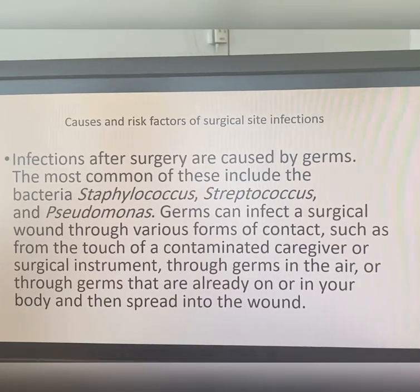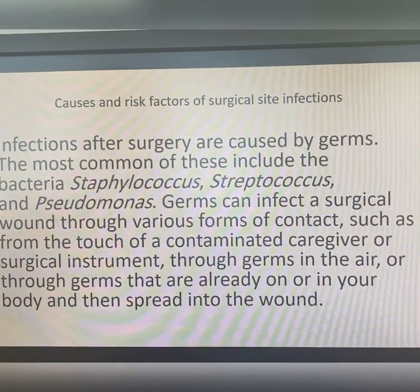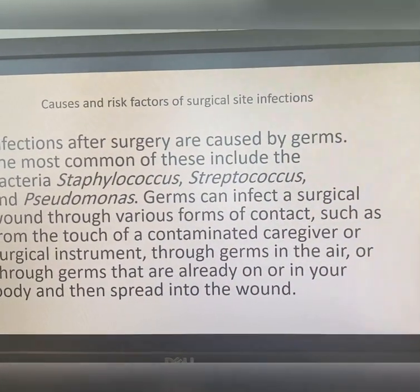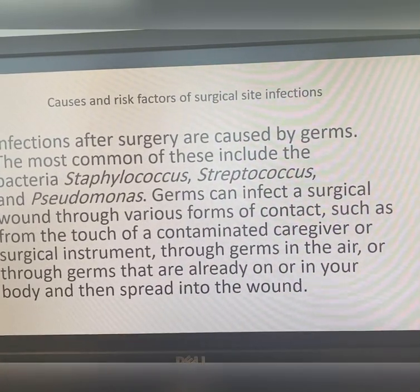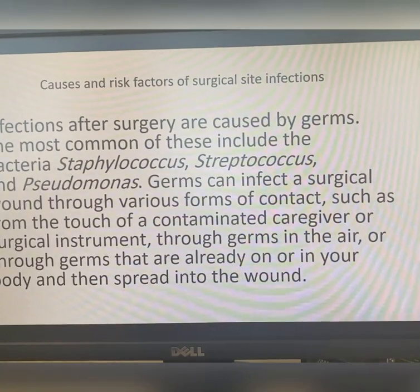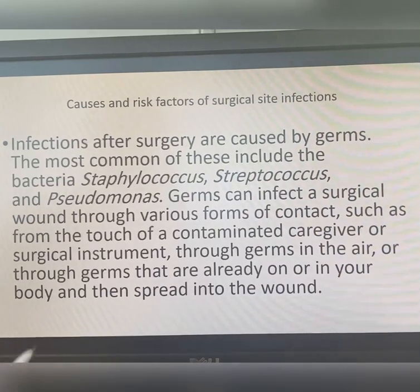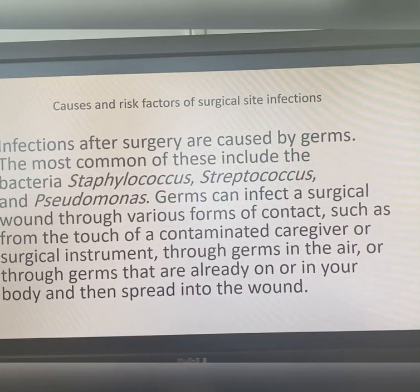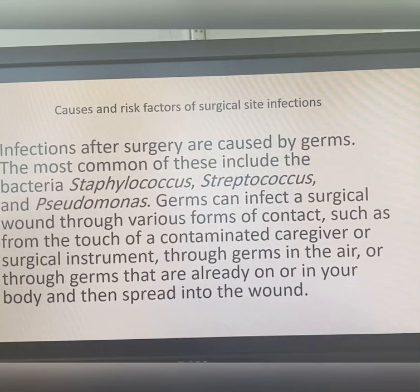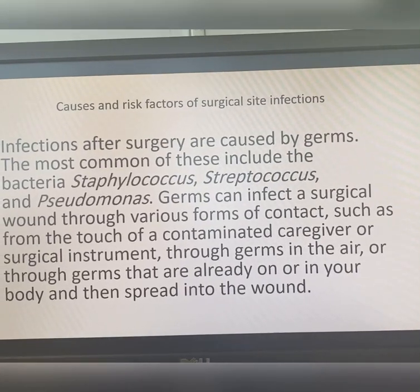Infections after surgery are caused by germs. The most common include bacteria such as Staphylococcus, Streptococcus, and Pseudomonas. Germs can infect a surgical wound through various forms of contact — from the touch of a contaminated caregiver or surgical instrument, through germs in the air, or through germs already on or in your body that then spread into the wound.